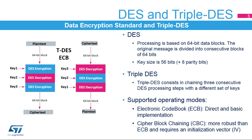ECB is a direct implementation, block after block, with no dependencies between them. It can be used safely with small messages. For larger messages, CBC is preferred, since it efficiently randomizes the encrypted output. Triple DES consists in chaining three consecutive DES operations for the same block of 64 bits with either the same key or with three different keys. As with DES, block chaining can follow either ECB or CBC.